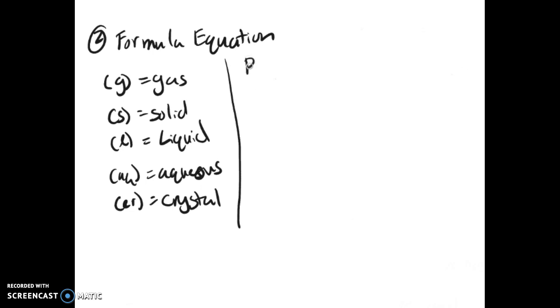Now, these are used for both reactants and products. Ones that are product specific or can be used for products only are when you use an arrow like this, it means it's a gaseous product. And if you use either PPT in parentheses or a down arrow, it means that there is a solid precipitate for a product.